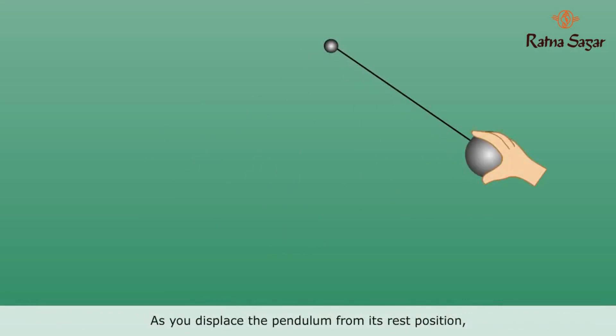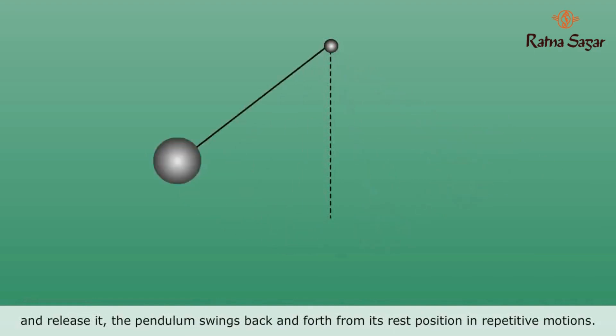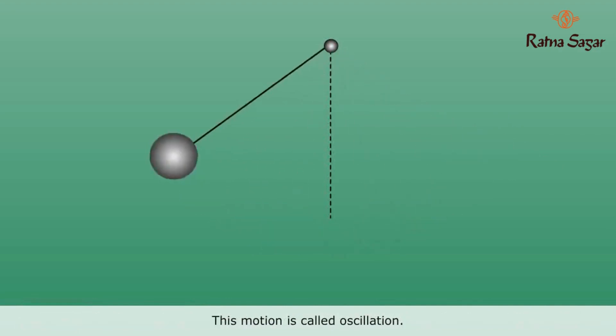As you displace the pendulum from its rest position and release it, the pendulum swings back and forth from its rest position in repetitive motions. This motion is called oscillation.